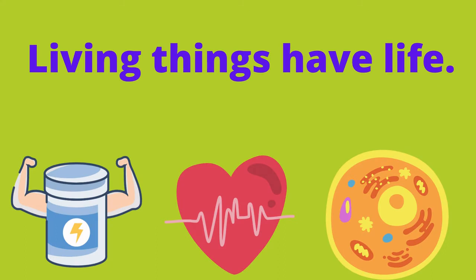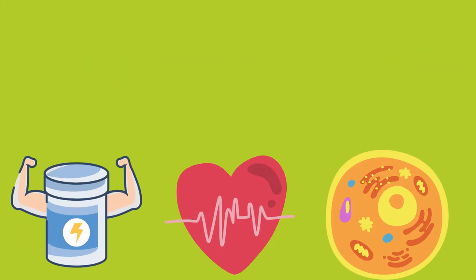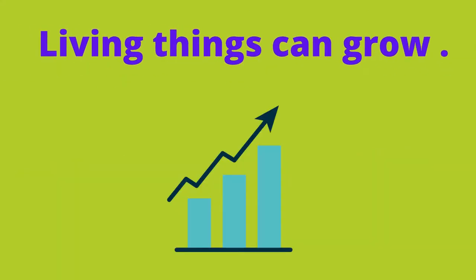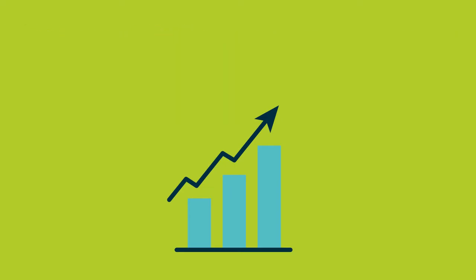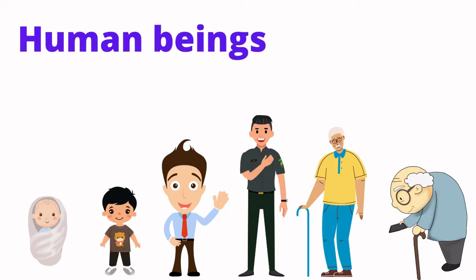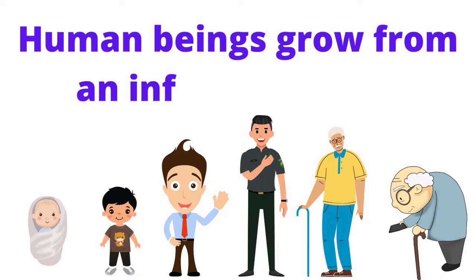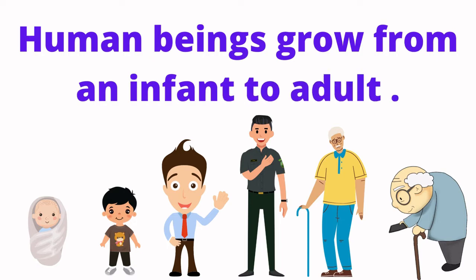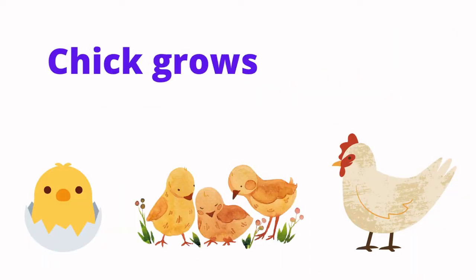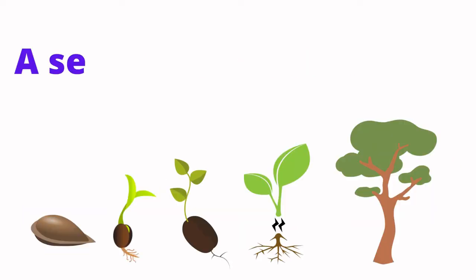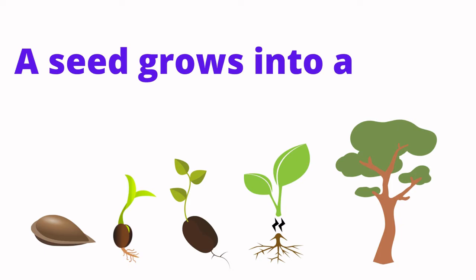Living things have life. Living things can grow. Human beings grow from an infant to adult. Chick grows into hen. A seed grows into a tree.